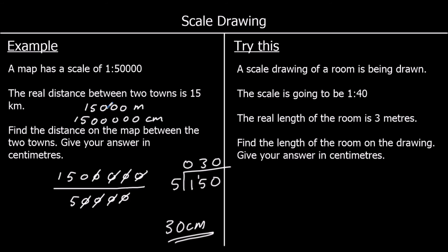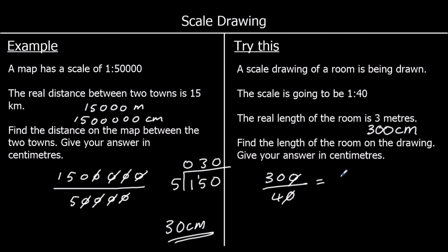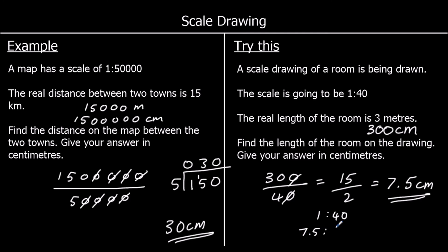Here's one for you to try. A scale drawing of a room is being drawn. The scale is 1 to 40 and the real length of the room is 3 meters. Find the length of the room in the drawing in centimeters. The real length is 300 cm, and the drawing is going to be 40 times smaller, so we do 300 divided by 40. That's the same as 30 over 4, which equals 15 over 2, which is 7.5. So it'll be 7.5 centimeters. The scale of 1 to 40 is the same as 7.5 to 300.